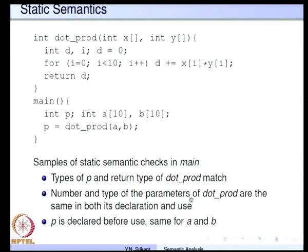Do the number and type of parameters of dot product match in both its declaration and use? Yes — in the usage we have two parameters, and in the declaration of dot product we also have two parameters. Both are arrays in declaration and usage. Is p declared before use? Is a declared before use? Is b declared before use? Yes — p, a, and b are all declared and then used, so all these properties are satisfied for the main program.